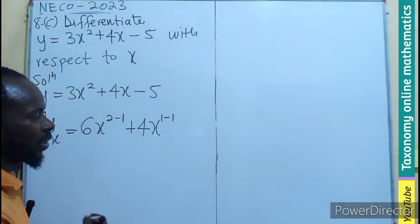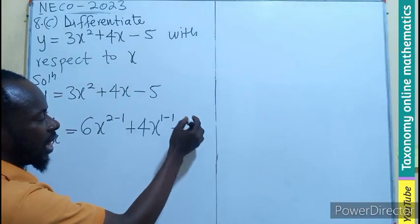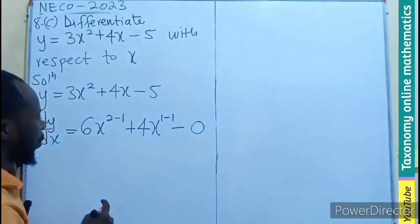Then this is going to be minus. If we differentiate a constant, we get a 0.